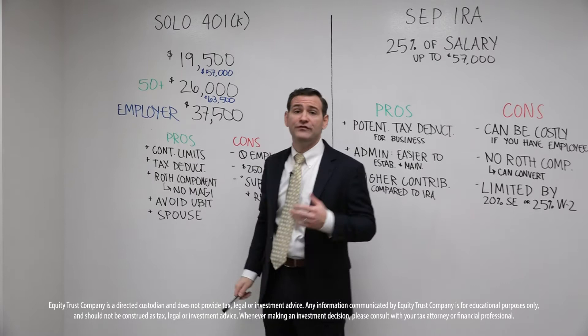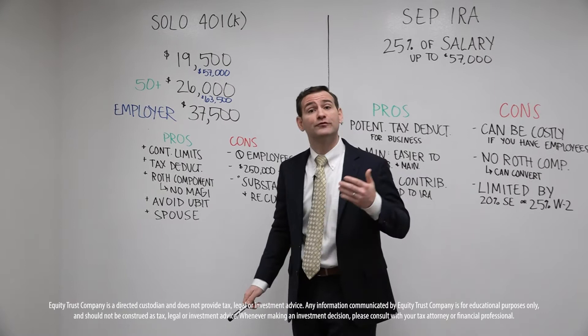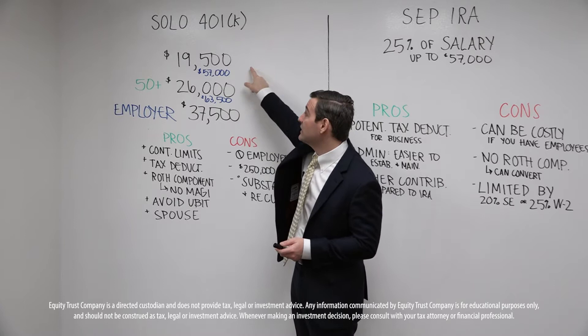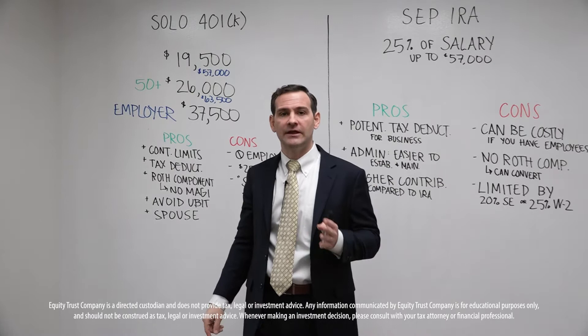When you're 50 years old or older, you have what's called a catch-up provision. The government says as you get older, you can put more money into a retirement plan. That goes for IRAs as well as solo 401ks. So the contribution limit is $26,000 if you're 50 or older. In recap, wearing our employee hat, we can contribute up to $19,500 when under 50 and up to $26,000 when we are 50 and older.